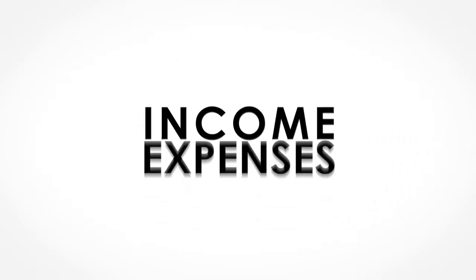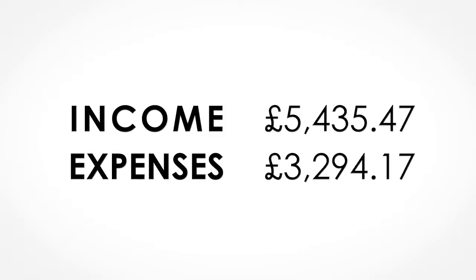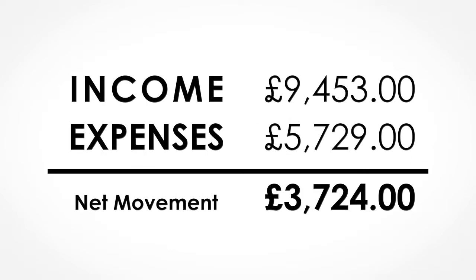To generate a cash flow forecast, you take a period of time, for example one year. The cash flow is split into two sections: income and expenses. Each section is then totalled at the bottom and the net movement is calculated.